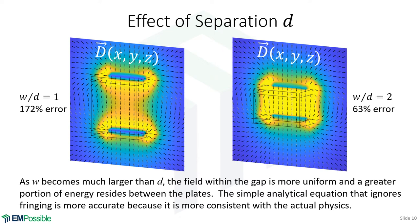Using this model, we can study the effect of certain parameters, such as the separation between the plates. The original configuration has one-by-one-meter plates separated by one meter — essentially a cube. When I halved the separation, the error between the analytical and numerical solutions went way down. As the separation closes, a greater proportion of the field energy is between the plates and the field looks more uniform, which is more consistent with the assumptions in the analytical solution. As the gap goes narrower and narrower, the simulation would match the analytical equation almost exactly.